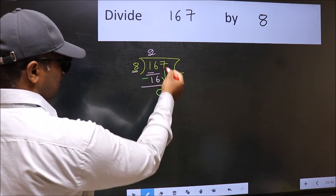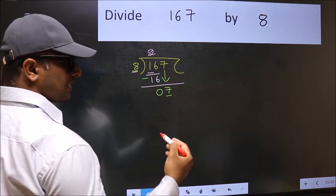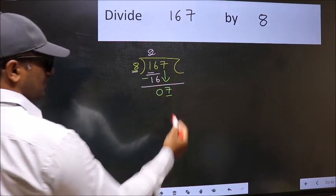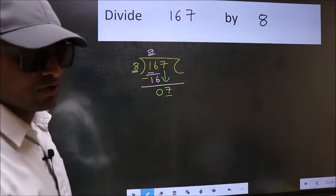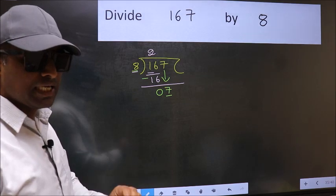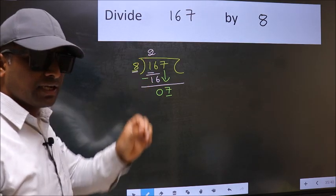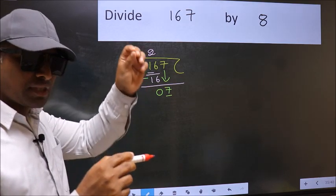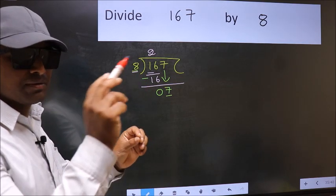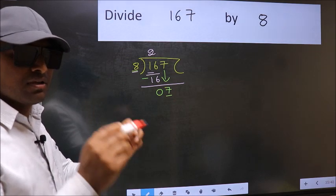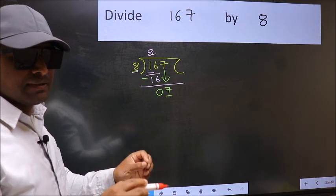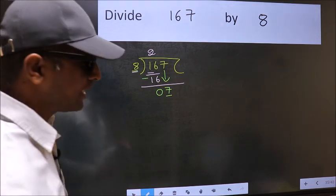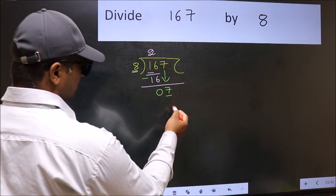I repeat: bringing the number down and putting dot and taking 0 both at the same step you should not do. Instead, what you should think of doing is which number should we take here?